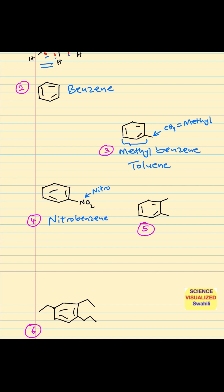Now you realize that we're not indicating the position of the substituent. In this first example, the substituent is actually at position one, but we're not showing that because it implies it's on the first position. Usually when you have only one substituent, you don't need to show the position. Same thing with nitrobenzene — you don't need to show the position.